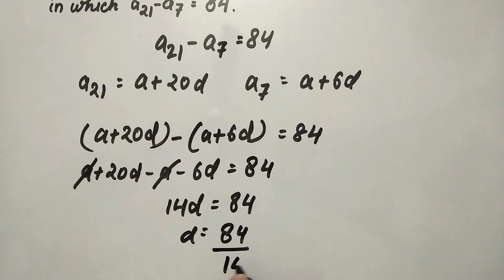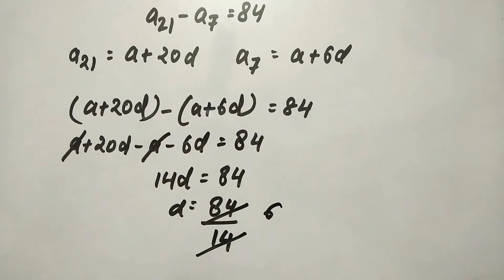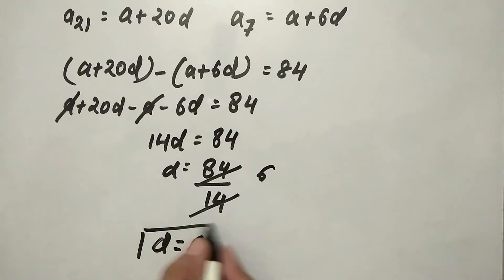d equals 84 upon 14, which simplifies to d equals 6. So we have found the common difference and the value is 6.